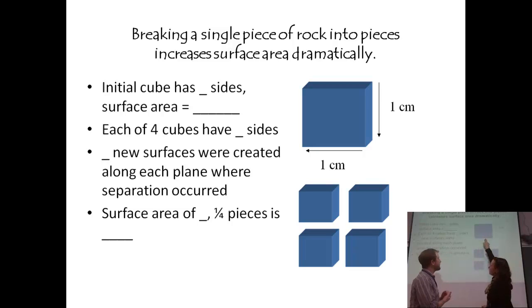And we were at four centimeters for the original square. By splitting it in half twice, we went from four centimeters to eight. So we doubled the amount of exposed surface that weathering could occur on.